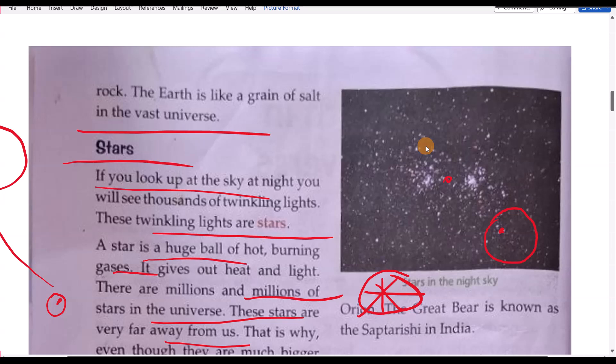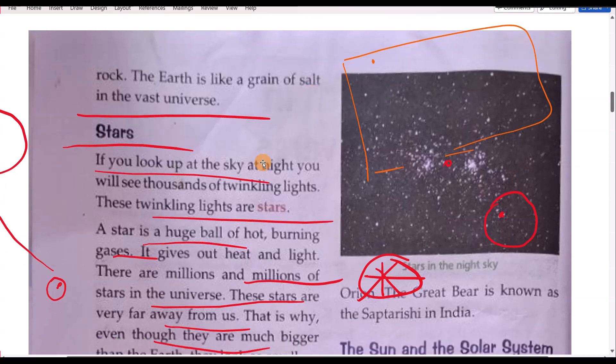The Earth is like a grain of salt in this universe. So suppose this is a very, very big universe, and in this universe we are very small, like a dot. Dot, grain, salt you can say. This small part of universe we are - our Earth and solar system.